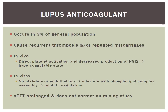Lupus anticoagulant is a source of recurrent thrombosis and repeated miscarriages in about 3% of the population. The name is a misnomer — despite 'anticoagulant,' it causes more clotting. In vivo, there is direct platelet activation and decreased prostaglandin I2 production, leading to a hypercoagulant state. In vitro, without platelets or endothelium, it interferes with phospholipid complex assembly and inhibits coagulation — hence the name lupus anticoagulant. In these patients, you will see a prolonged APTT that does not correct on a mixing study.